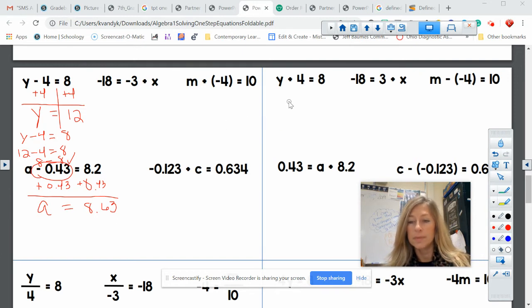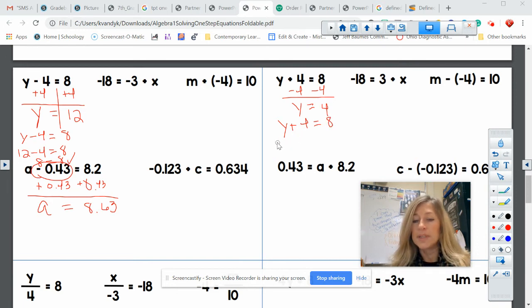Let's try a couple of addition. Now, if I'm adding four, I want to do the opposite, which is subtracting. And when I'm done, I have Y equals, and in this case, it's eight minus four, which is four. Let's do a check. Y plus four equals eight. I'm substituting in four plus four equals eight. And I don't know if you can tell, but four plus four is eight. So our work checked.